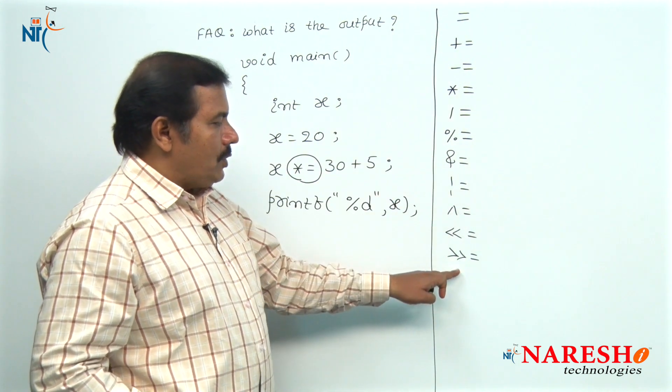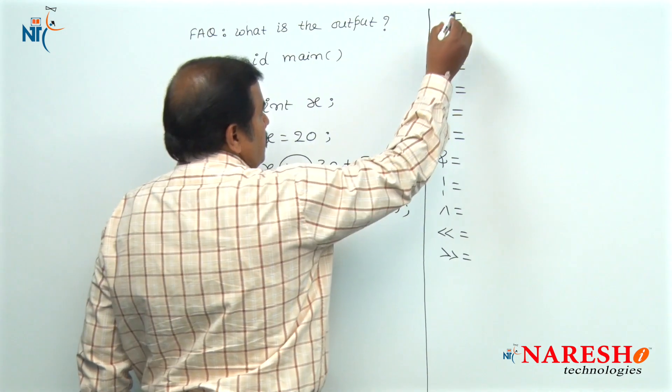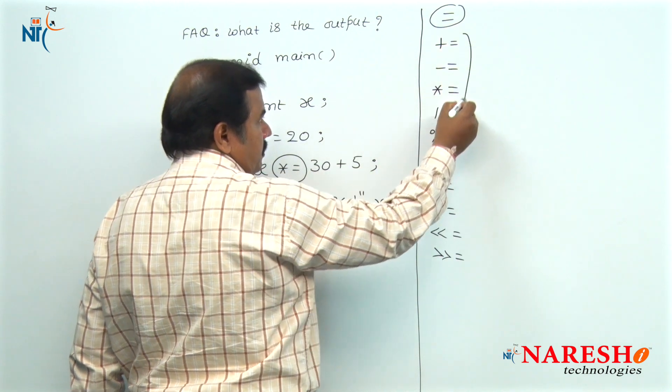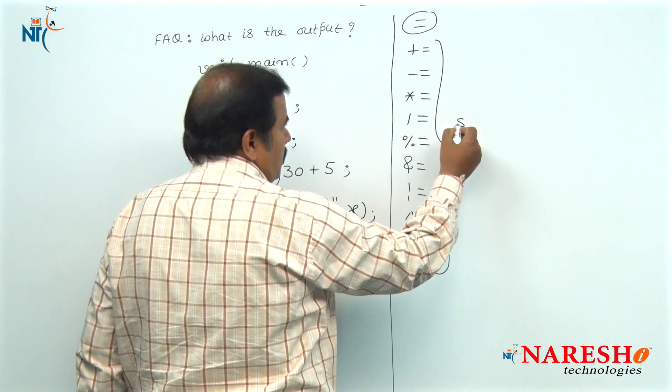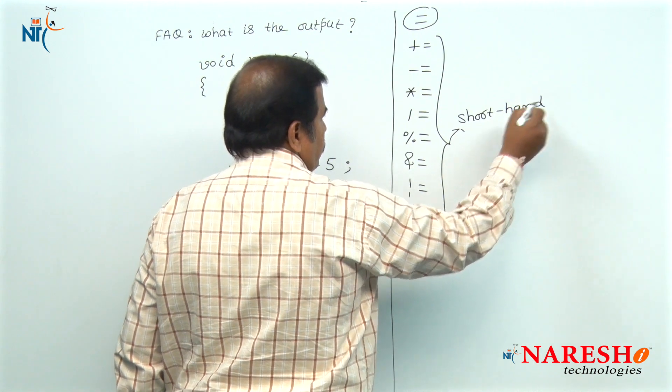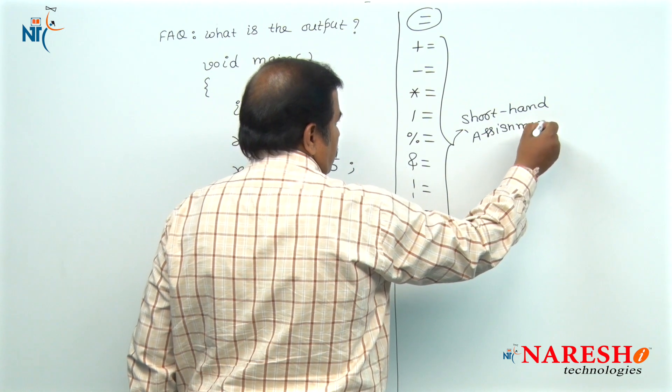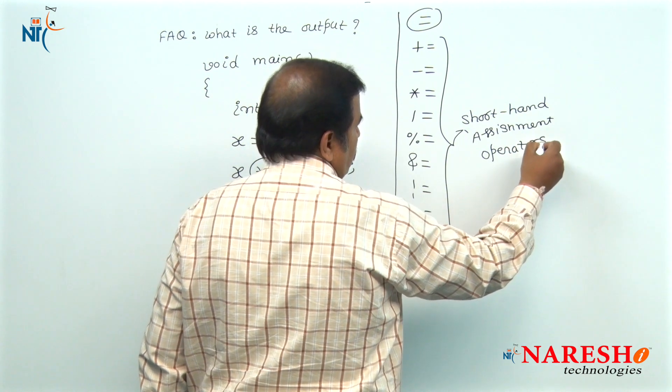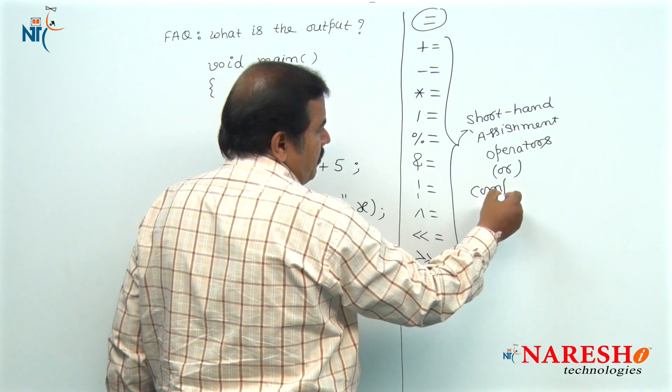All these are the assignment operators in C programming. This single equal to symbol is called just an assignment operator. Remaining all assignment operators are known as shorthand assignment operators, or also known as compound assignment operators.